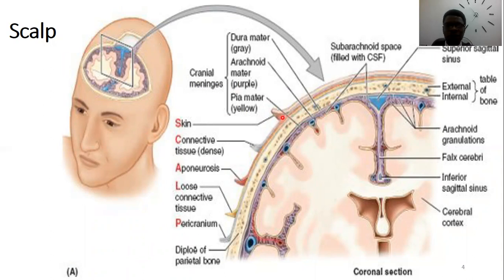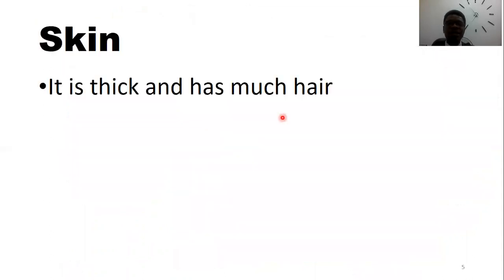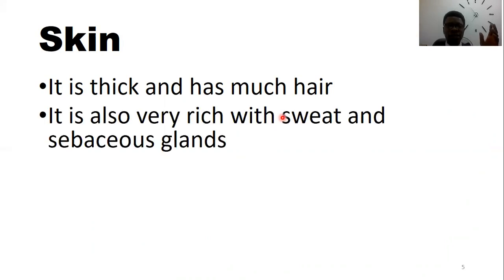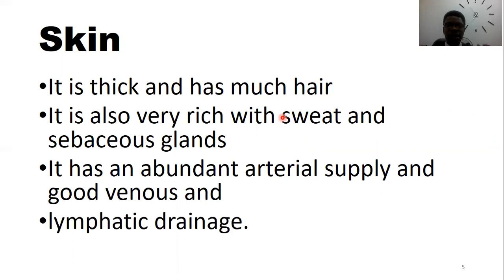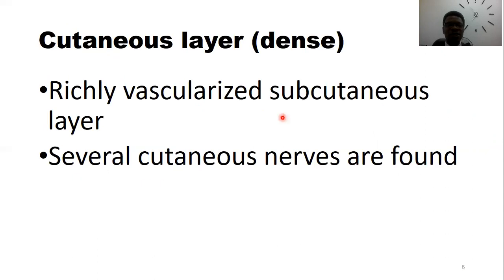This is the pericranium. The skin, just like every other skin, is thick — a bit thicker than other areas of the body, except the palms and so on. Uniquely, it has much more hair compared to any other area of the body. It also has a lot of sweat glands and sebaceous glands, abundant arterial supply, good venous drainage, and lymphatics drained from it.